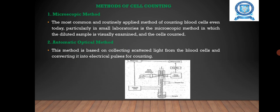Next we are going to see some methods of cell counting. First is the microscopic method. The most common and routinely applied method of counting blood cells, even today particularly in small laboratories, is the microscopic method in which the diluted sample is visually examined and the cells counted.